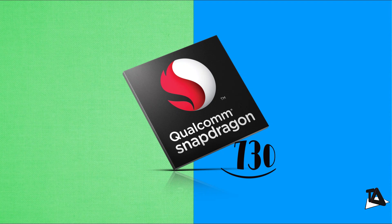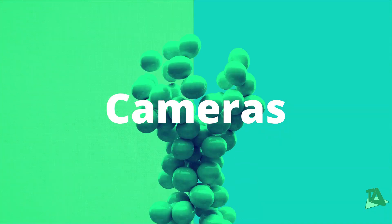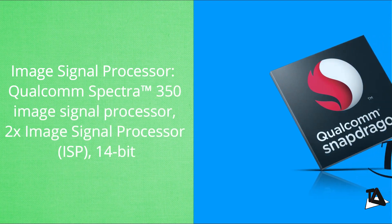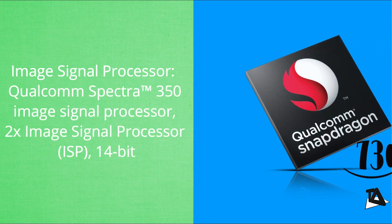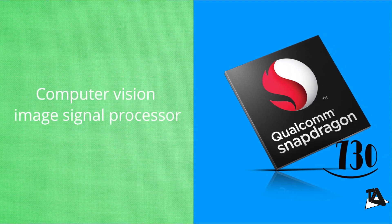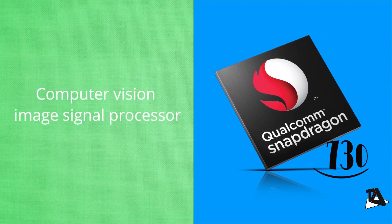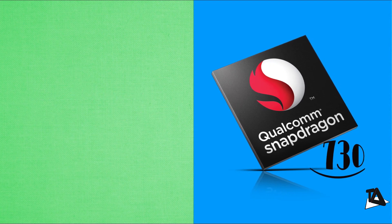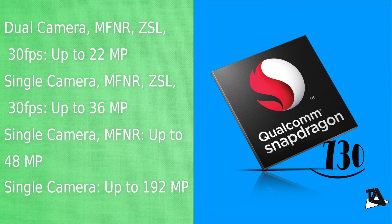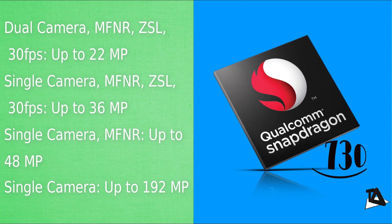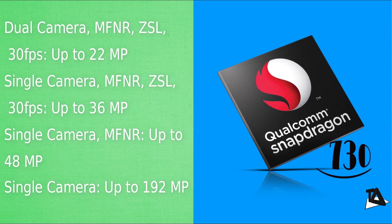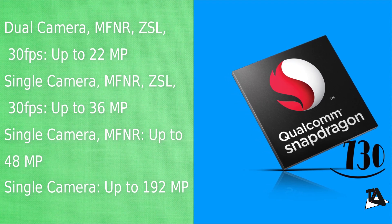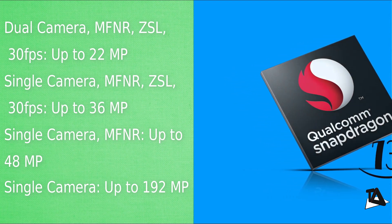For cameras, the Spectra 350 dual 14-bit ISP in Snapdragon 730 supports up to 192-megapixel camera sensors. It is also the first Snapdragon 700 series chipset with support for computer vision image signal processing and hybrid autofocus. It supports up to 22-megapixel dual camera or 36-megapixel single camera with multi-frame noise reduction and zero shutter lag, as well as a 48-megapixel single camera with zero shutter lag.